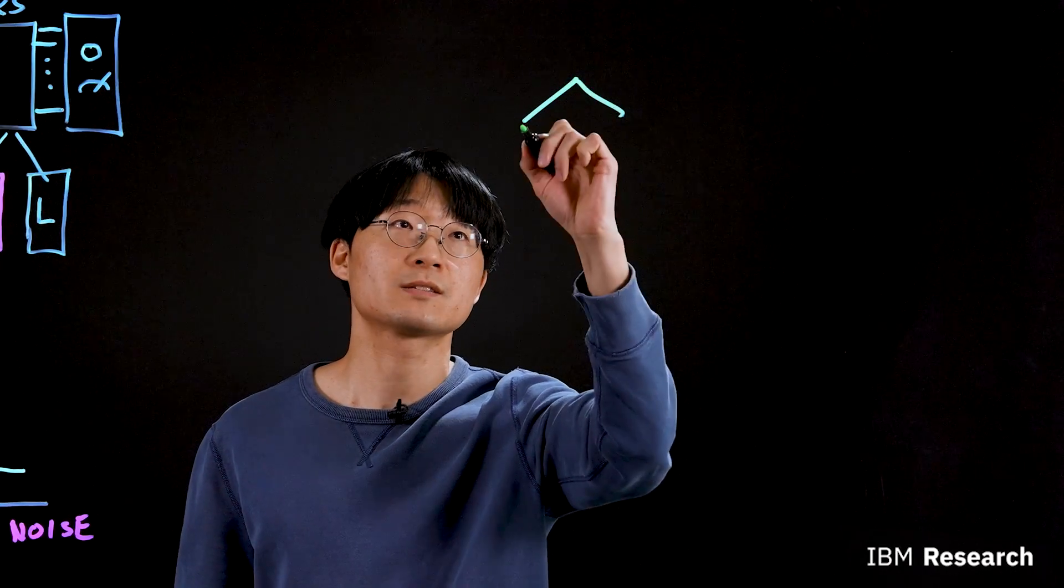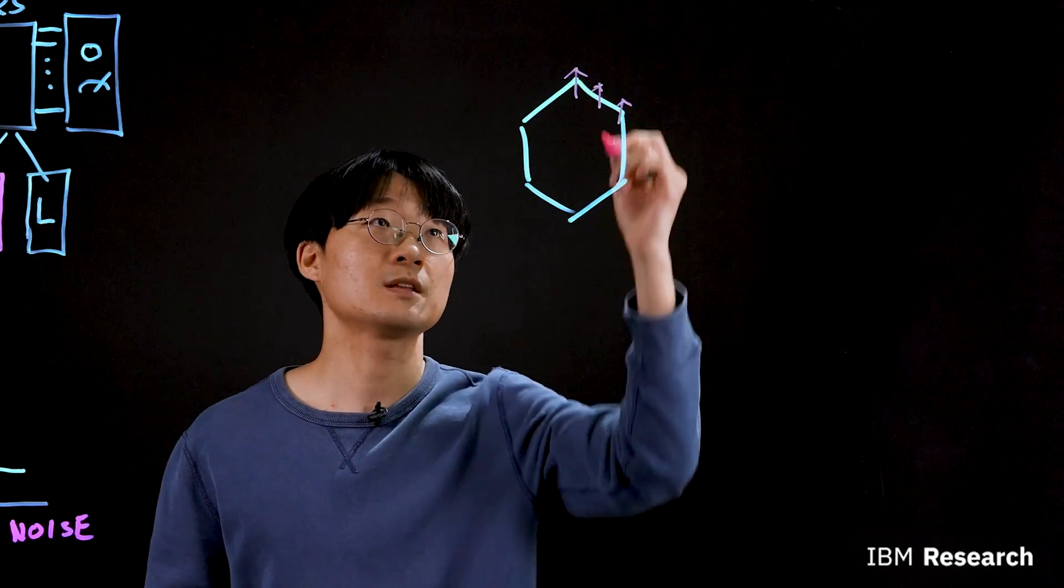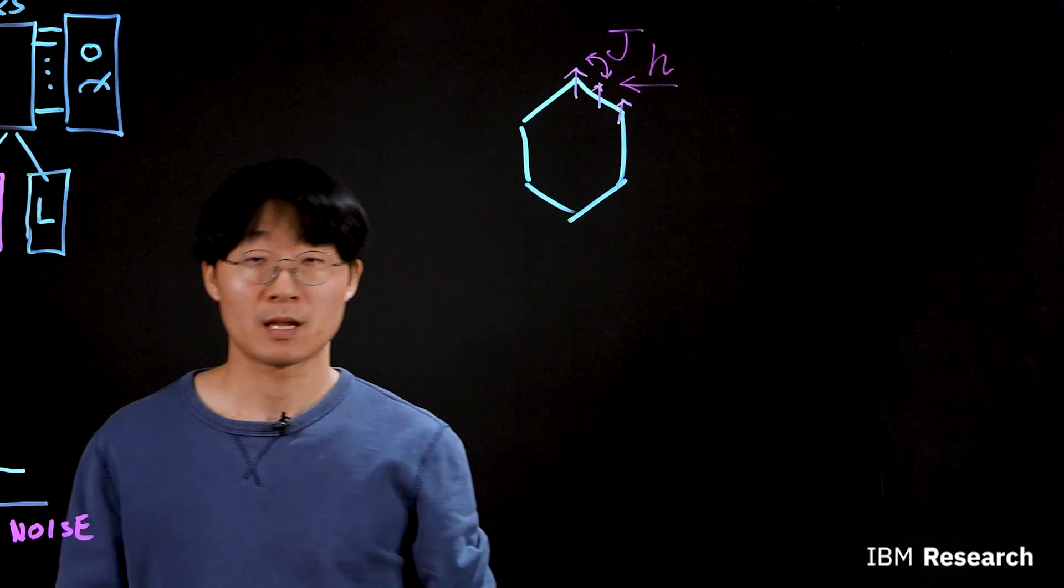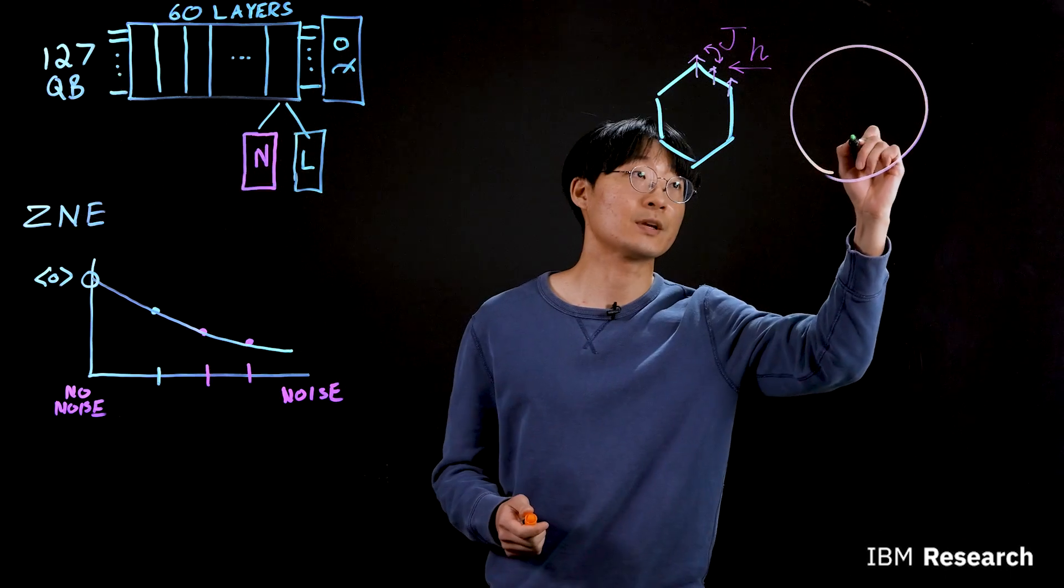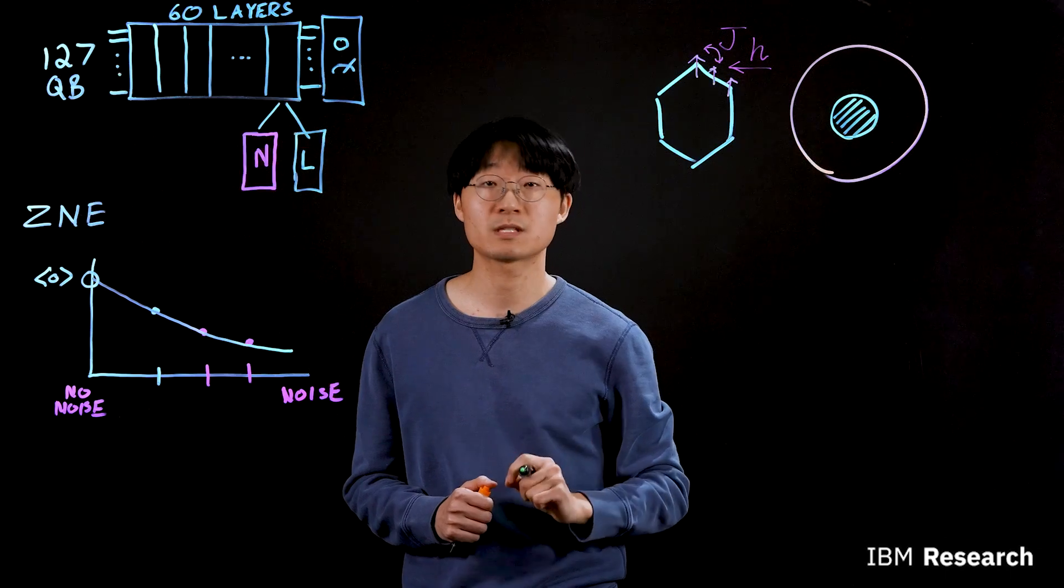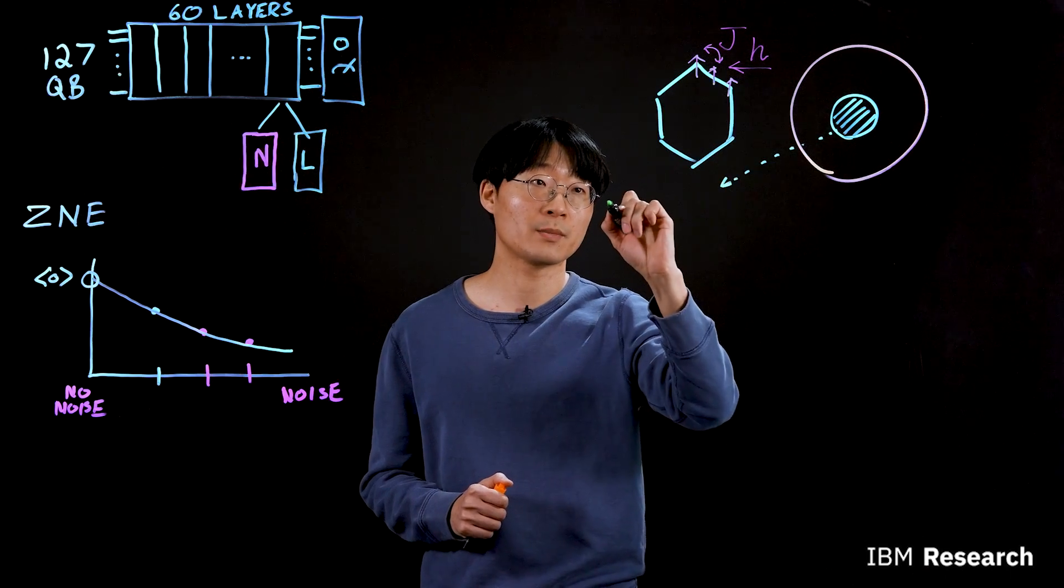So we use ZNE as our error mitigation method. We use our IBM Eagle 127 qubit processor to study this spin dynamics. To be more specific, we map our spin lattice to our hardware topology, which is heavy X topology. And this spin is governed by nearest neighbor interaction J and global transverse field H. And as you can see here, we have large parameter space to explore. And among this parameter space, we have some parameter that results in Clifford circuit, meaning we can efficiently simulate this circuit, thereby we obtain ideal value. So we utilize this nice property to examine our results.